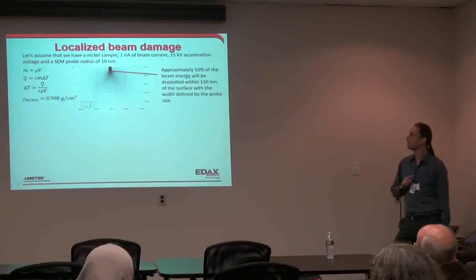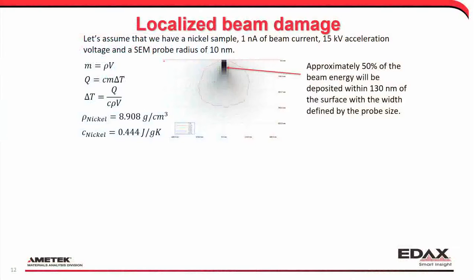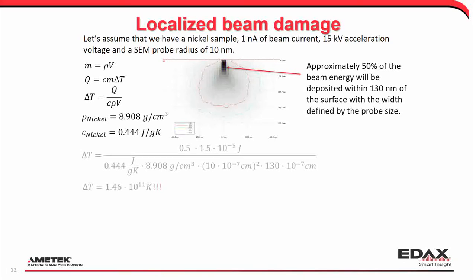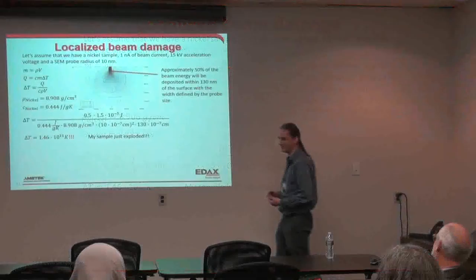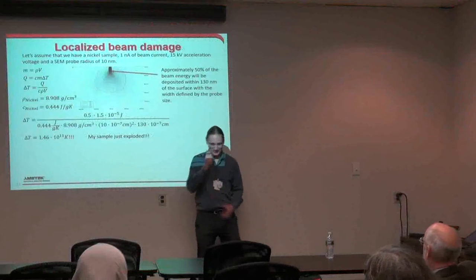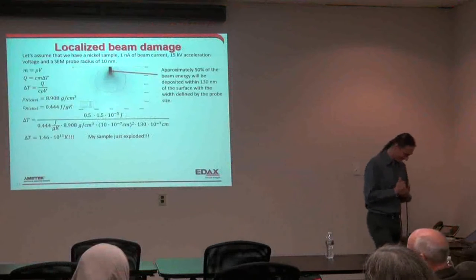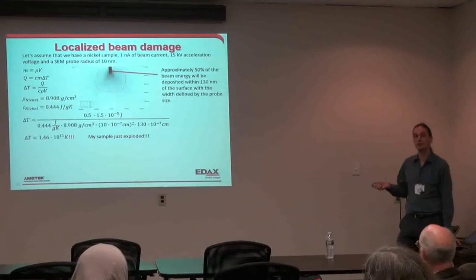Entering all the numbers gives us 1.46×10¹¹ kelvin — that's a lot. That's blowing things up. Obviously this is not true in practice. We are depositing heat, but most of our energy doesn't go into heat. Only a small fraction goes into heat, and even if we deposit energy within this small volume, it's not an isolated volume — the heat will dissipate out into the larger matrix.